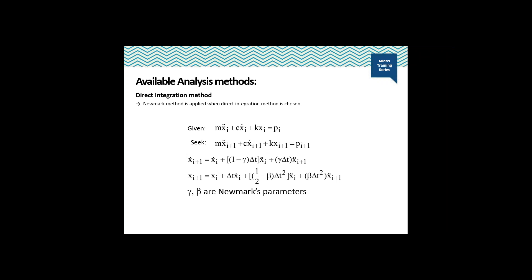With the time increment, what we seek is what is happening at the next time increment — that is the seek equation. Using Newmark's method, these parameters could be obtained as shown in the equations, where gamma and beta are the Newmark parameters.